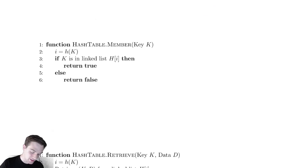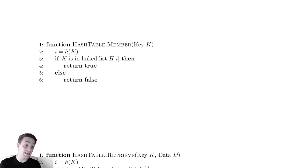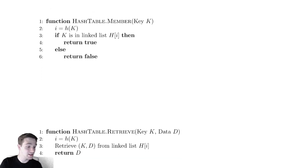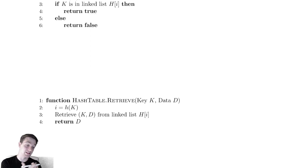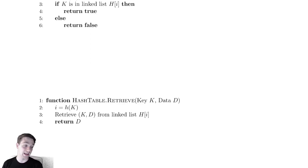Our second method determines if something is in the hash table. We compute the hash of our key and then determine if that key is in the linked list at that location — returning true if so, false if not. Retrieve will be very similar; the only difference is we retrieve the element from the linked list and return the data. These are all relatively straightforward implementations.